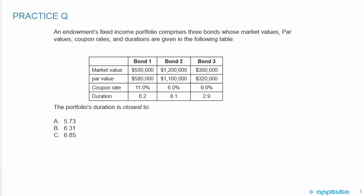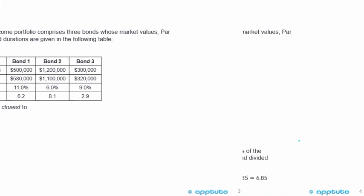The question is: the portfolio's duration is closest to A) 5.73, B) 6.31, or C) 6.85.